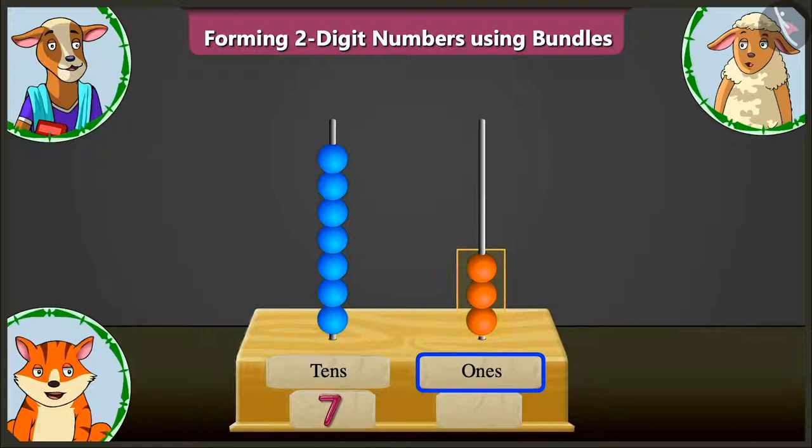Now, in the ones box in the abacus, there are one, two and three beads. So, in the ones box, we have to write three. Well done.